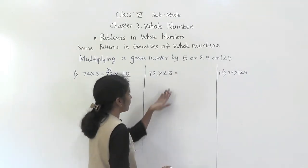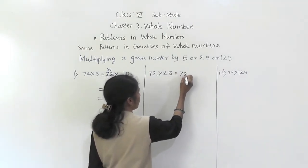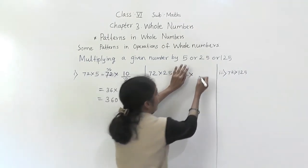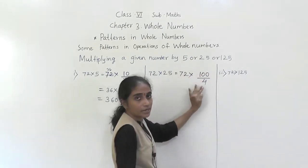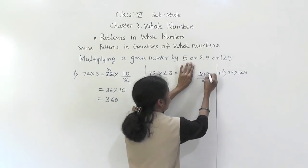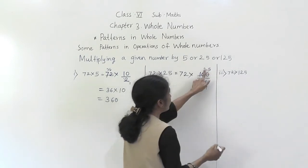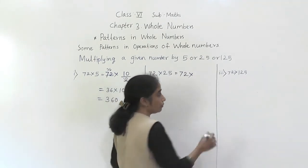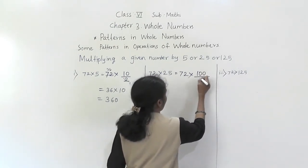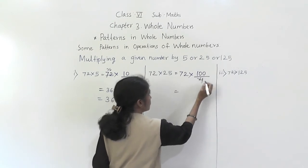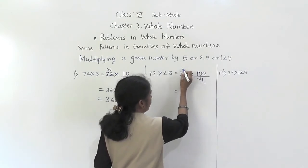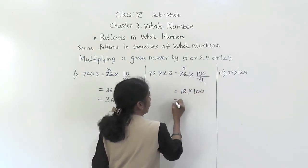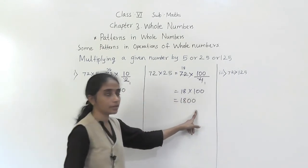For multiplying by 25: since 25 = 100 ÷ 4, we multiply the number by 100 and divide by 4. For 72 × 25: divide 72 by 4 — 4 ones are 4, 4 eights are 32 — giving 18, then multiply by 100 to get 1800.